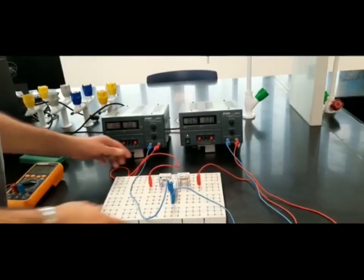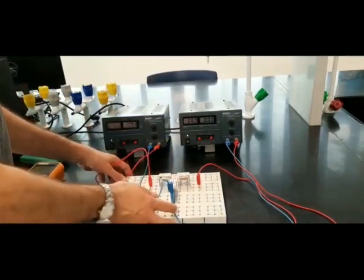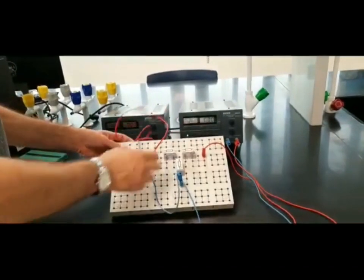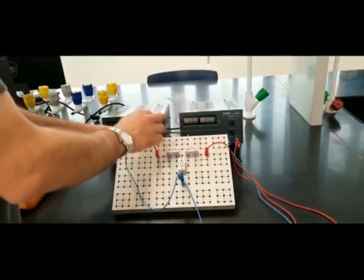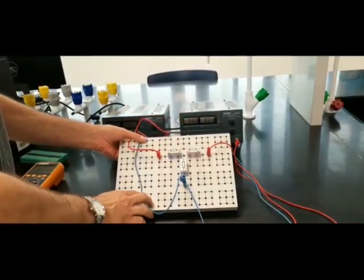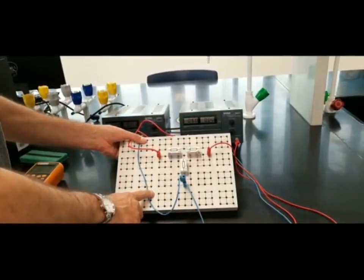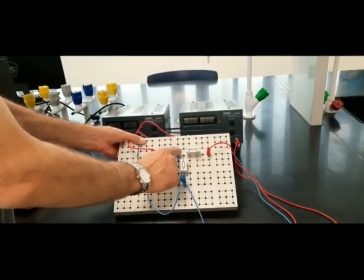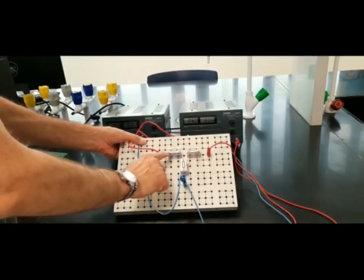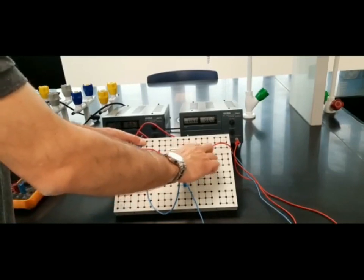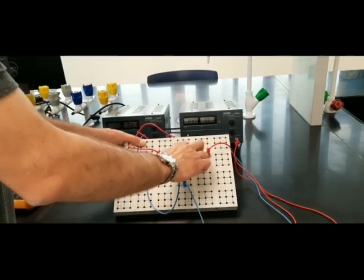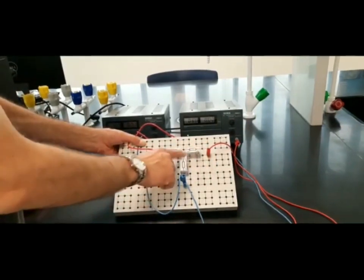This is the experimental setup. This is the breadboard from Ohm's experiment. We are using these three resistors: this resistor to the left is 47 ohms, the resistance on the right, R2, is 470 ohms.